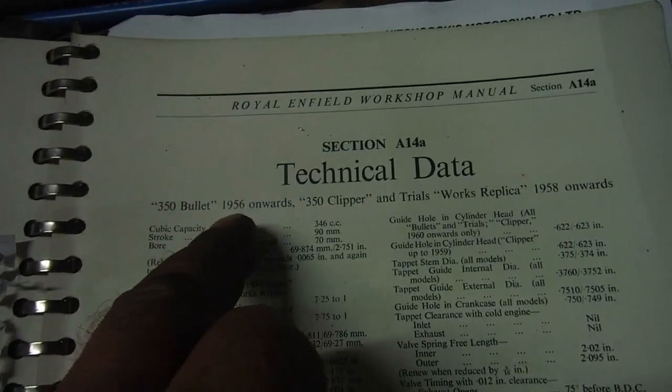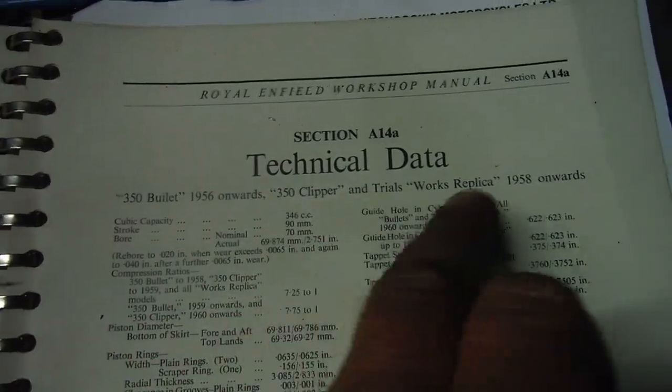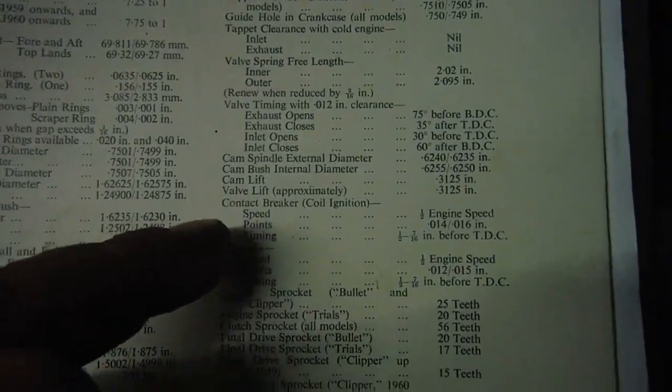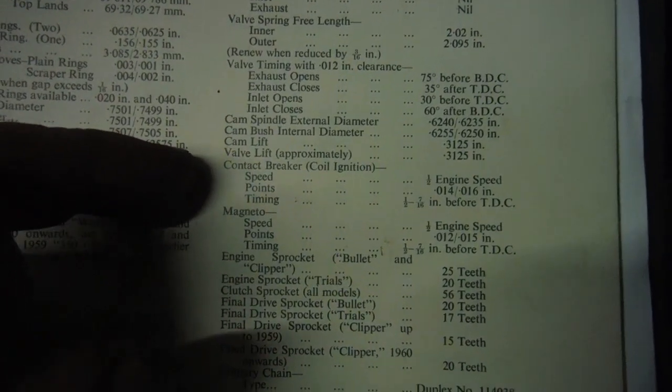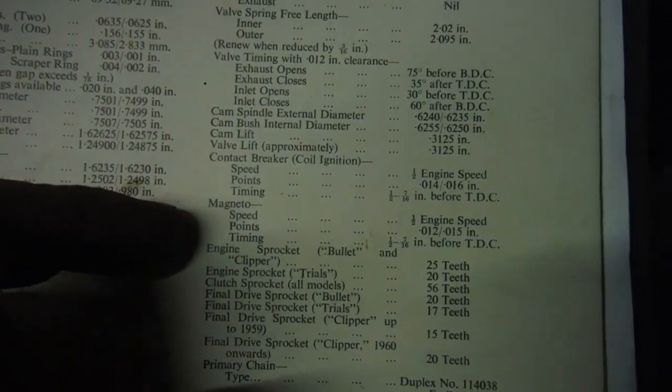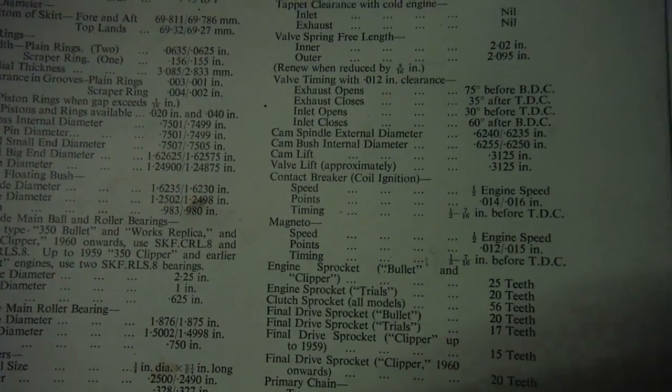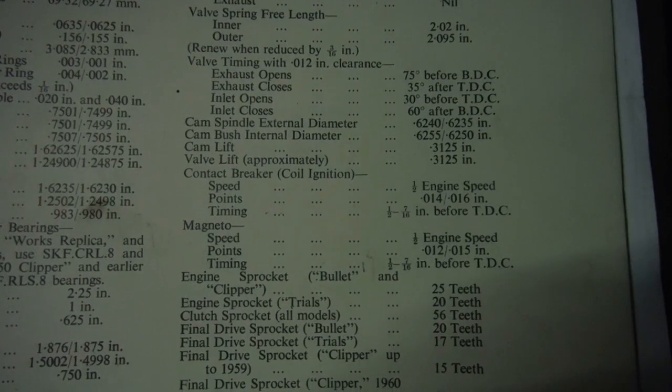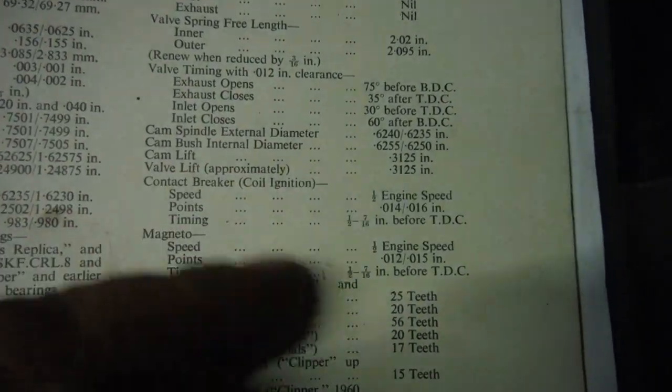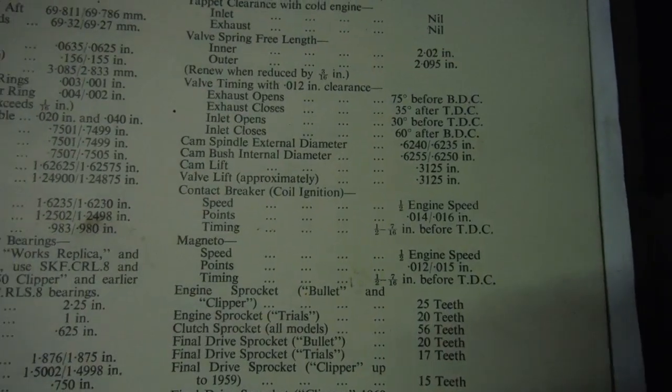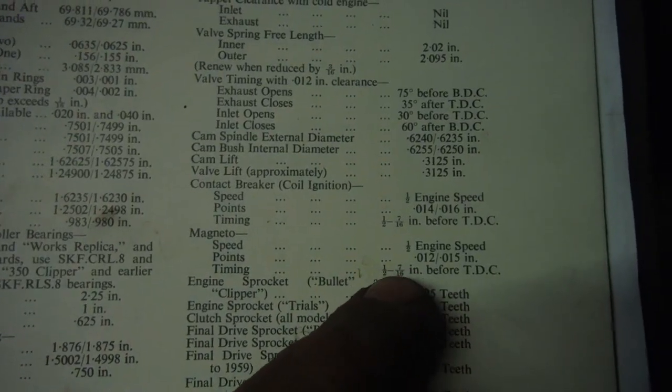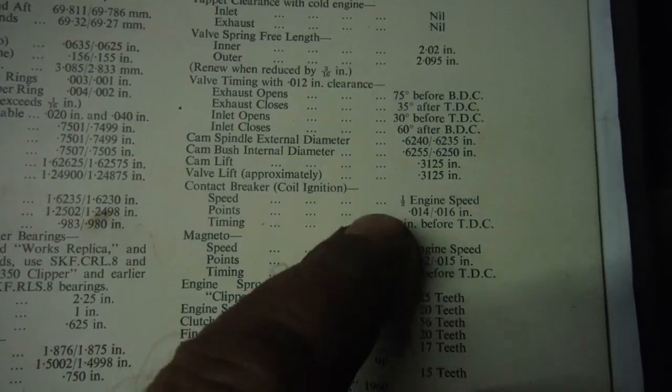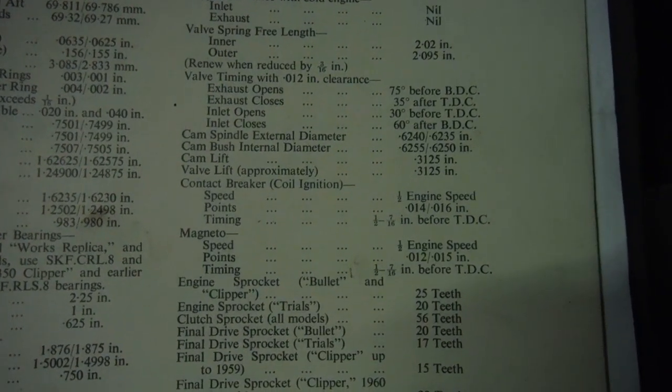Here's the 350 Bullet, 1956 onwards, Clipper, Trials, etc. We've got the figures for both contact breaker coil ignition and magneto. In both cases it says timing half inch down to seven-sixteenths of an inch before top dead center, whether you've got coil and battery or magneto. So there's the numbers, they're the same regardless of what type of ignition you've got: seven-sixteenths up to a half an inch before top dead center.